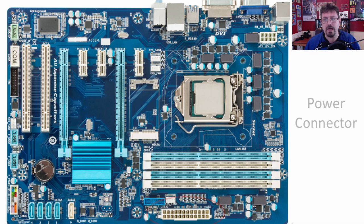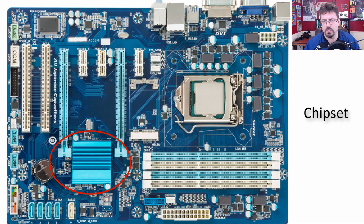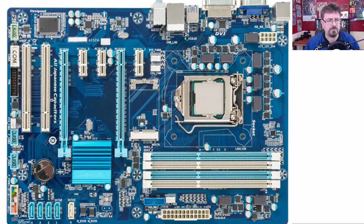Moving further down, we see another power connection — this is your main power connection to power the motherboard itself, coming off of the power supply. Over here we have a chipset. What we're actually seeing is a heatsink, and underneath the heatsink is the chipset. In older motherboards we had a North Bridge and South Bridge, but in this case we have a combined chipset beneath that heatsink. When you see a heatsink — whether on your CPU, chipset, or video card — you can pretty much guarantee there's a processor underneath it, because processors generate a tremendous amount of heat that needs to be pulled away so bad things don't happen.